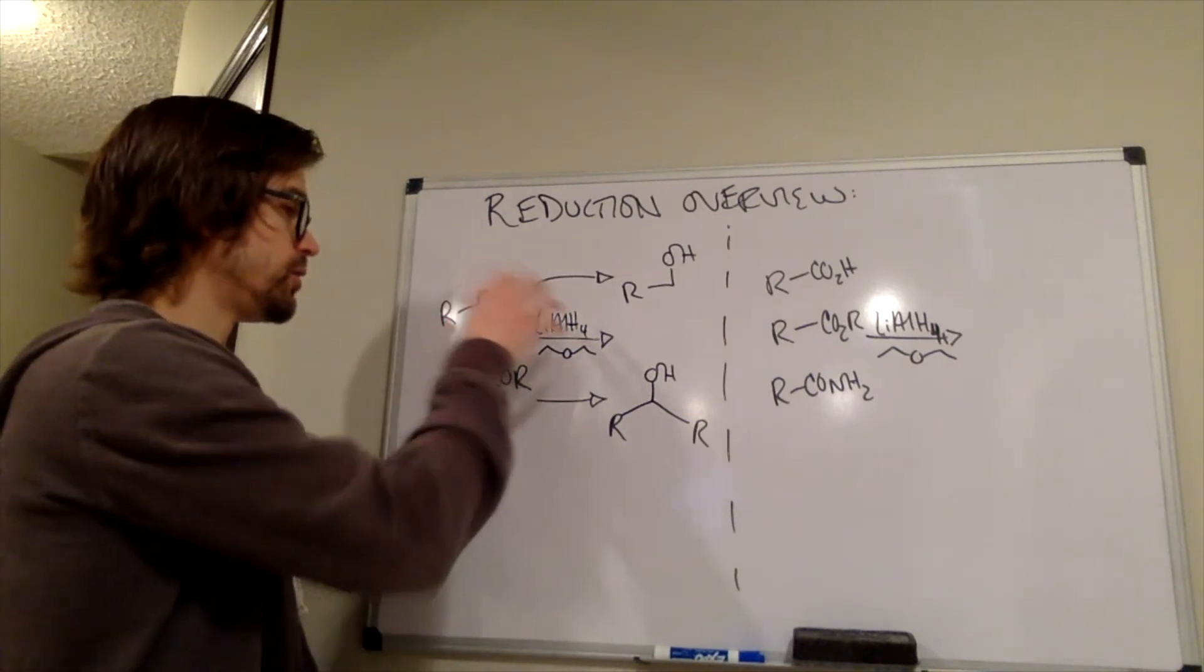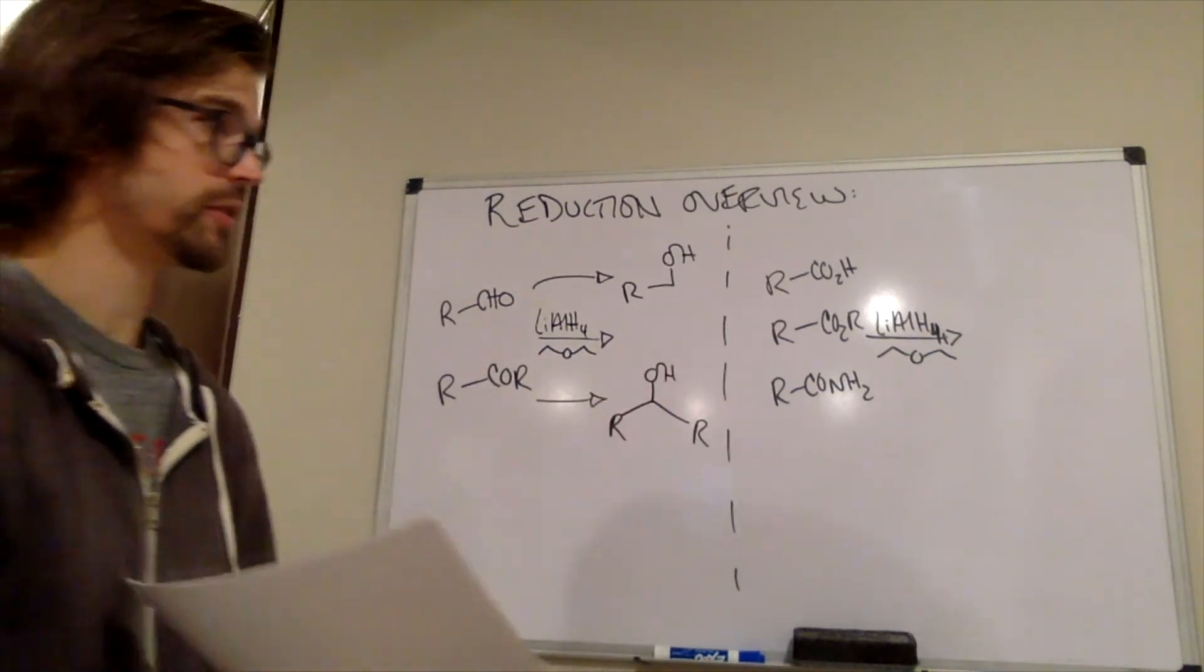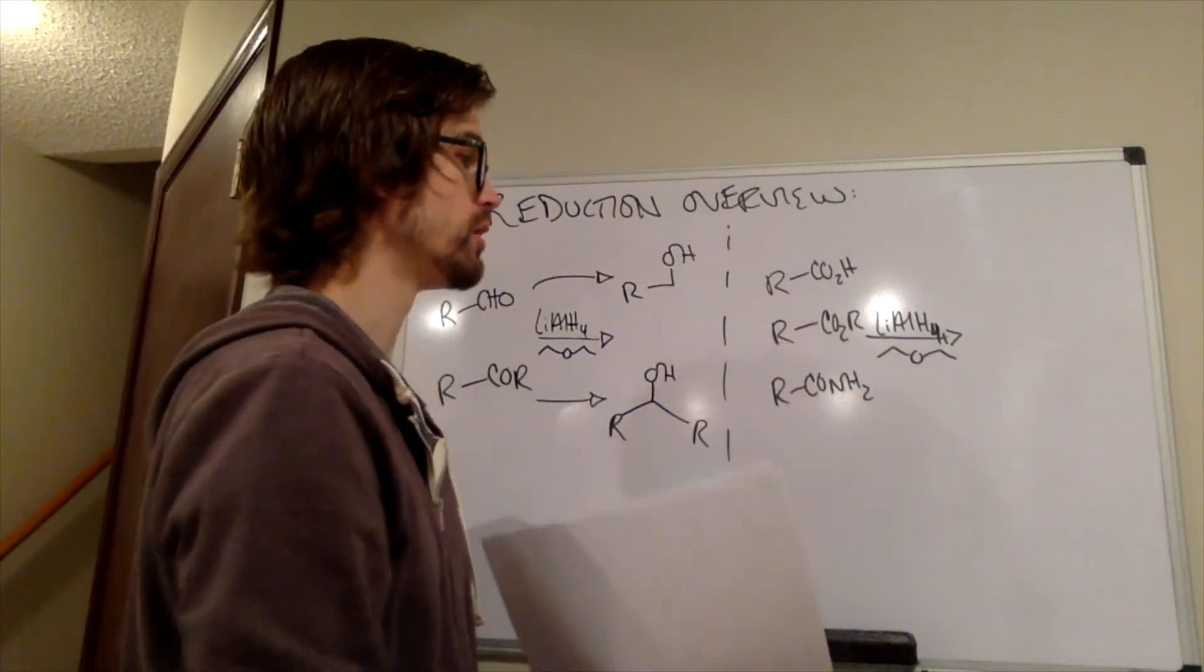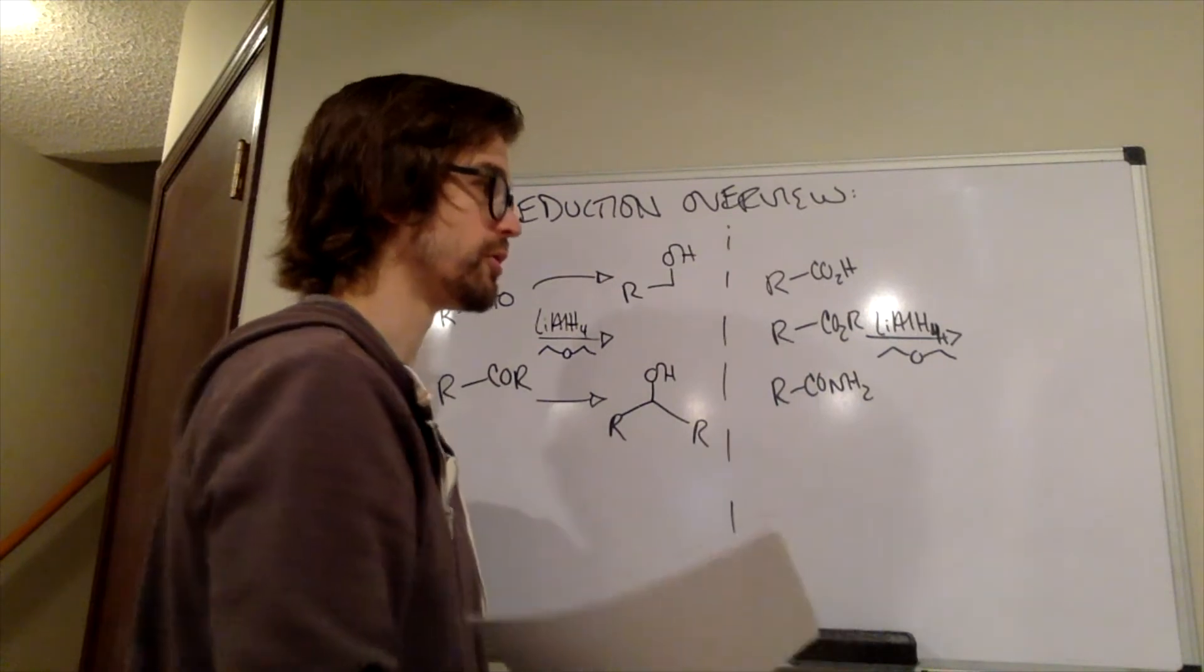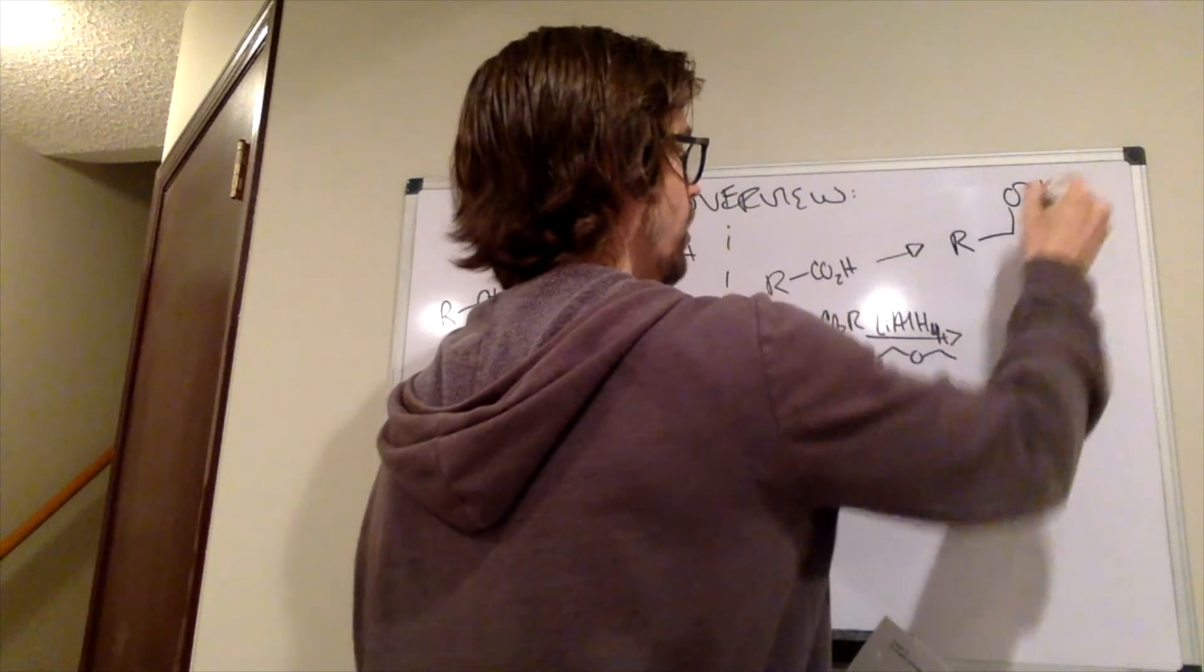So that being said, the strong reductant with the strong electrophile produces those. And the strong reductant with the less reactive electrophiles still works. The carboxylic acid forms the primary alcohol.